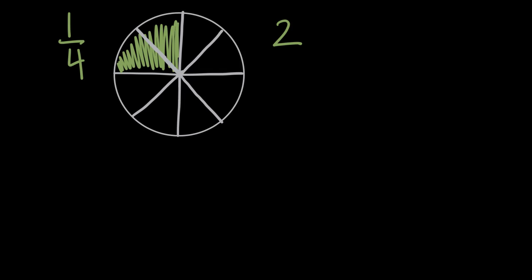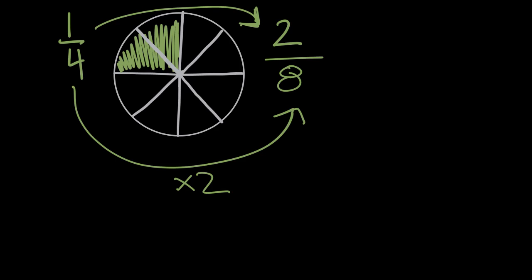So now this is 2 pieces out of 8 equal size pieces, so 2/8. And you can see 8 is a multiple of 4 because we multiplied by 2. And that's what we did. We multiplied each of our pieces by 2, and we also multiplied our numerator by 2 because that was also doubled. The amount of shaded pieces doubled when the entire amount of pieces doubled. And we don't have to do this just with 2. We could do any multiple of 4.